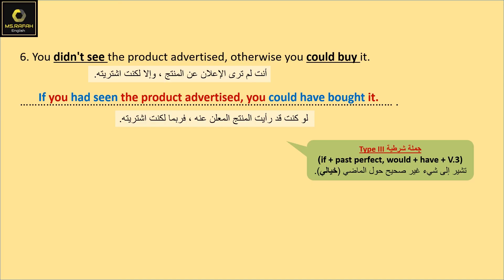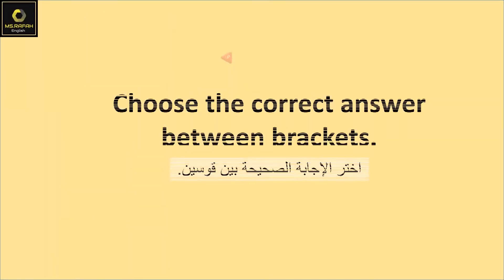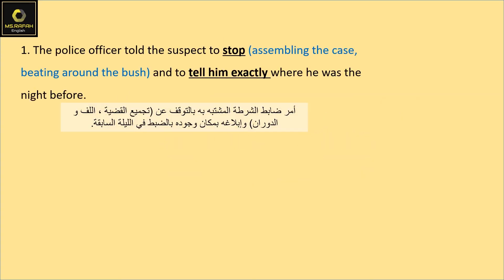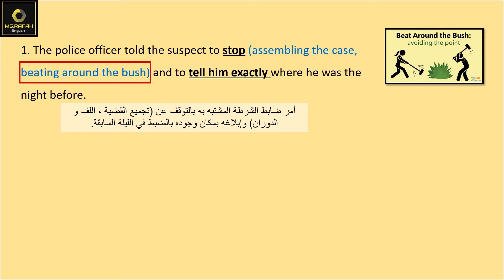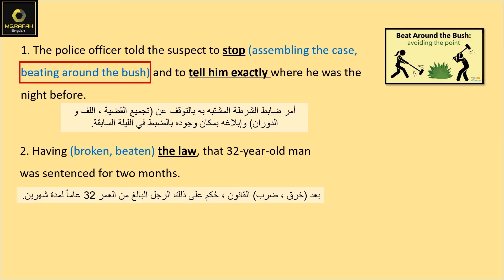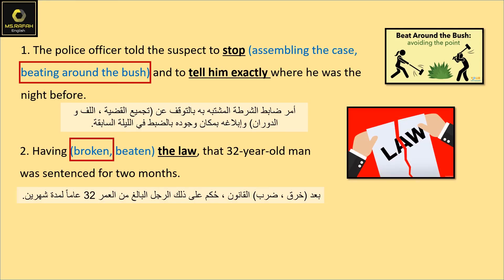Question 5. Choose the correct answer between brackets. The police officer told the suspect to stop beating around the bush and tell him exactly where he was the night before. Having broken the law, that 32-year-old man was sentenced for two months.